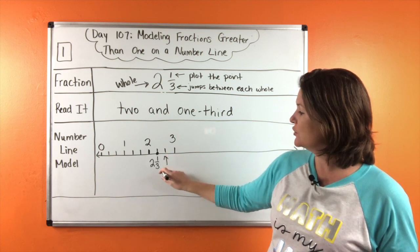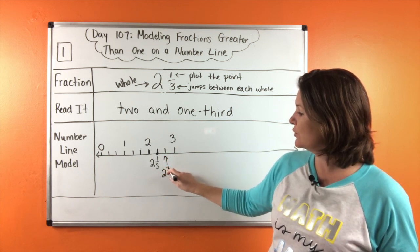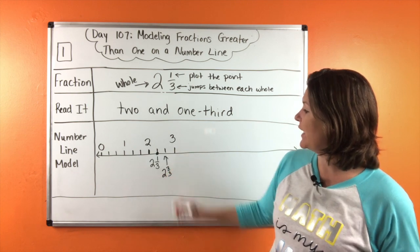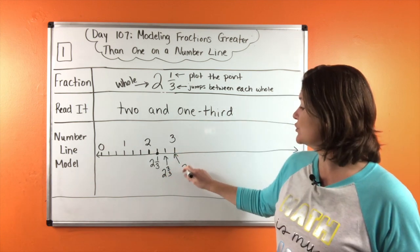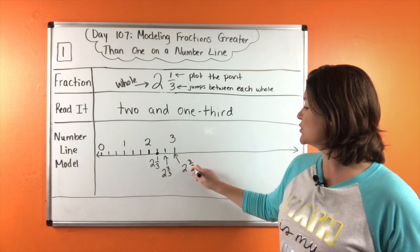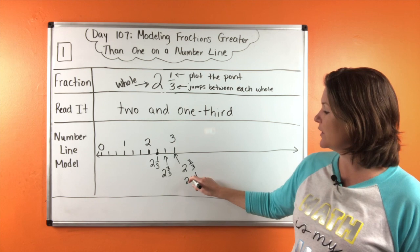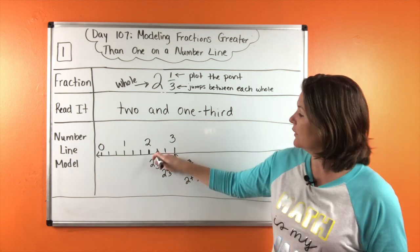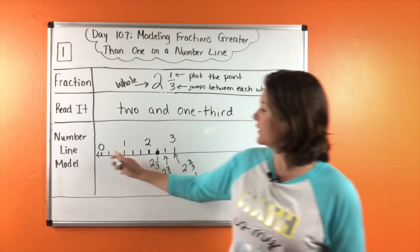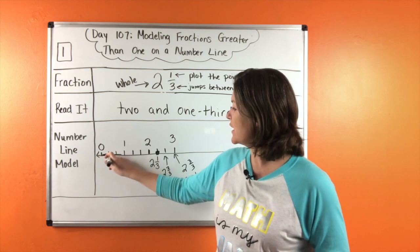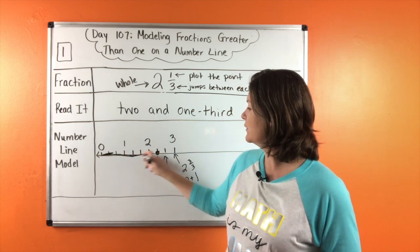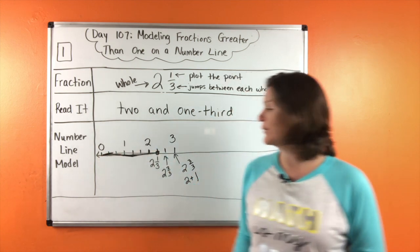And we can label this as two and one third. This is two and two thirds. And then we have three or two and three thirds, which would just be three because three thirds is really like one and two plus one equals three. All right. So that's where we plot the point right there. And then I'm just going to do a nice little shade until we get to that point.